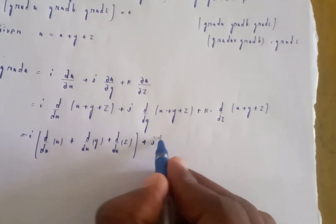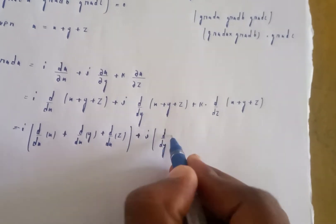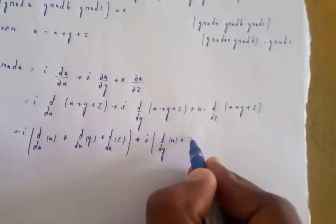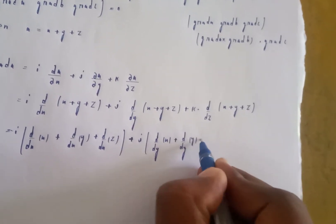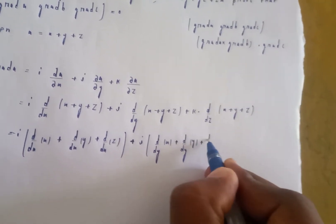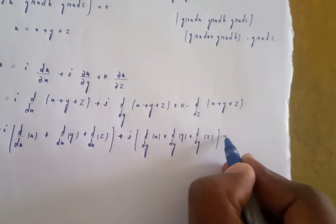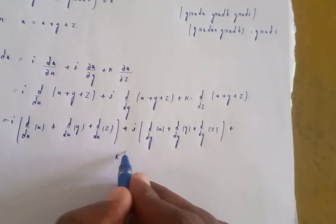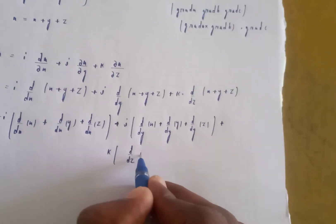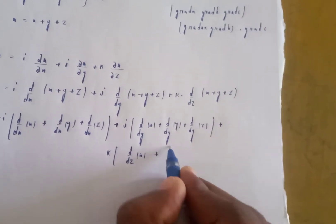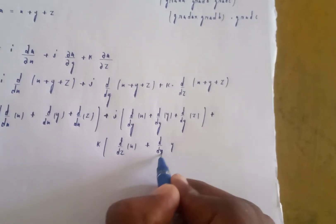Similarly, j of d by dy of x plus d by dy of y plus d by dy of z, plus k into d by dz of x plus d by dz of y plus d by dz of z.